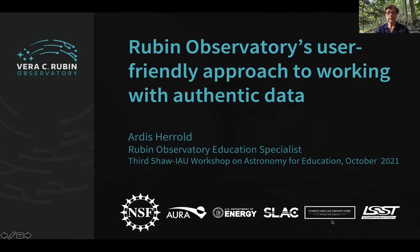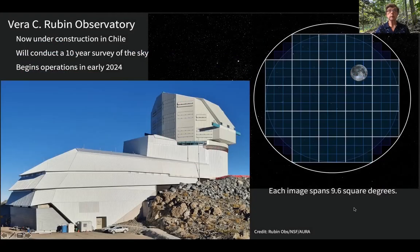Something we've thought a lot about is that often data access is difficult, and we want to make this as user-friendly as possible for the widest audience possible. Rubin Observatory is now under construction in Chile and we hope to begin operations in early 2024. The telescope and camera will take images of very large areas of sky — at the right you can see the size of the image compared to the full moon.